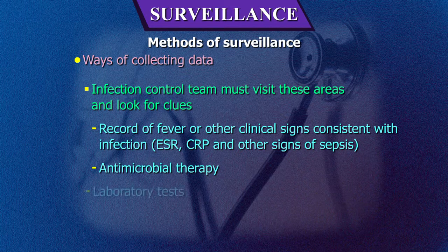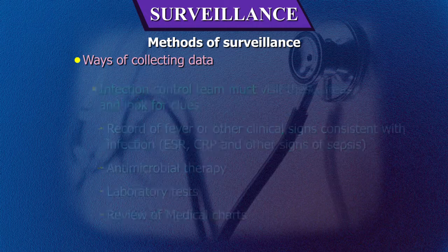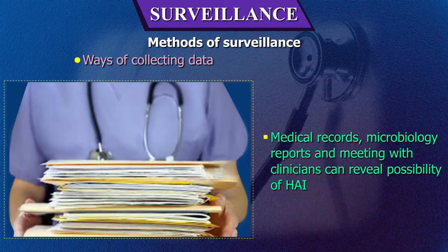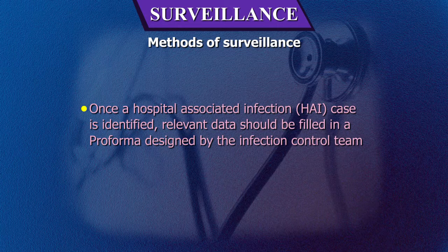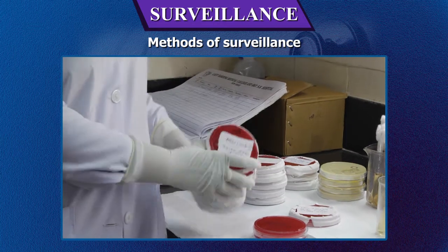Antimicrobial therapy, laboratory tests, review of medical charts, microbiology reports, and meetings with clinicians can also reveal the possibility of healthcare-associated infections. Once a hospital-associated infection case is identified, relevant data should be filled in a pro forma designed by the infection control team in consensus with other members of the infection control committee.